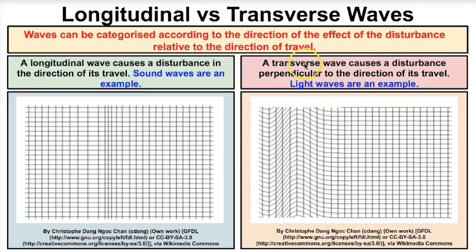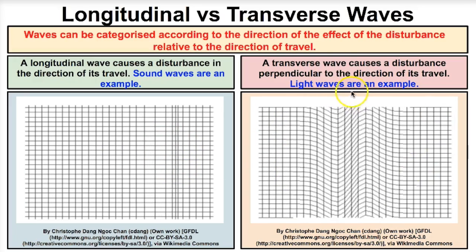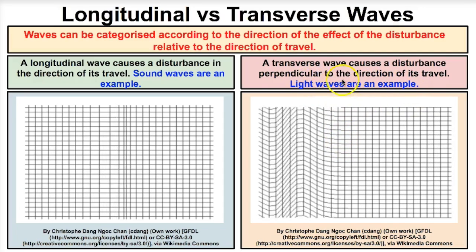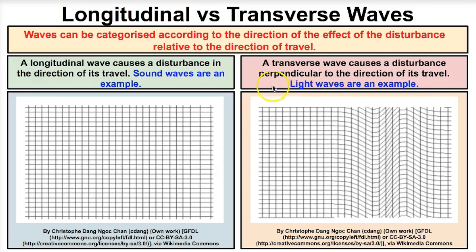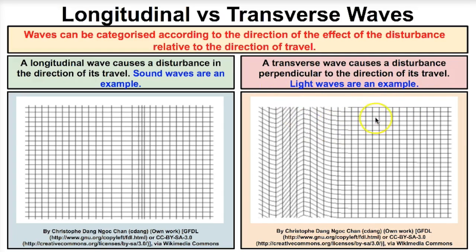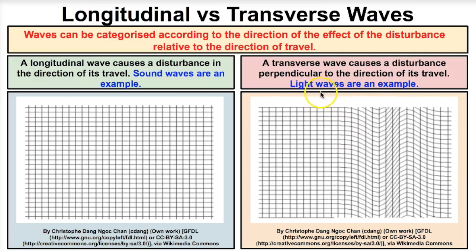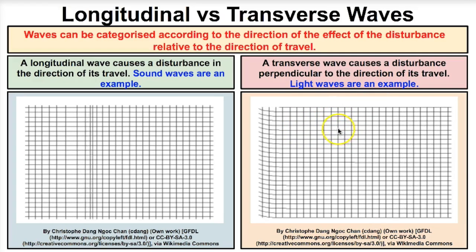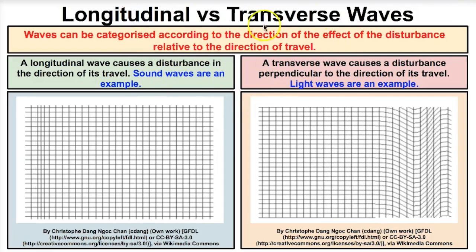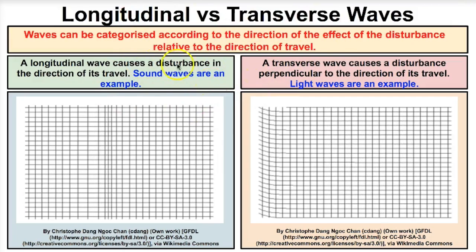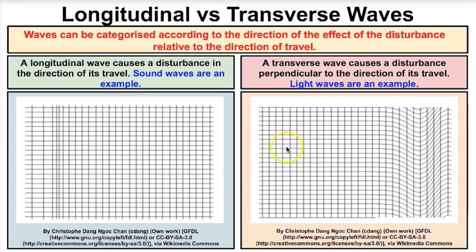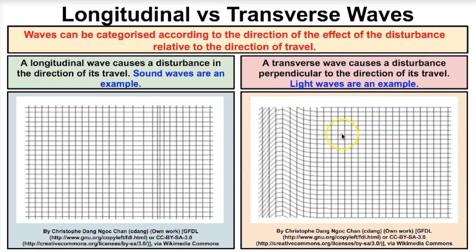Don't confuse longitudinal waves with transverse waves. A transverse wave causes a disturbance perpendicular to the direction of travel. Light waves and other forms of electromagnetic radiation — like microwaves, gamma rays, and radio waves — are all examples of transverse waves. Sound waves are longitudinal, whereas electromagnetic radiation like light is transverse.